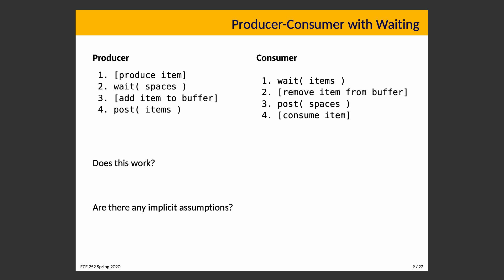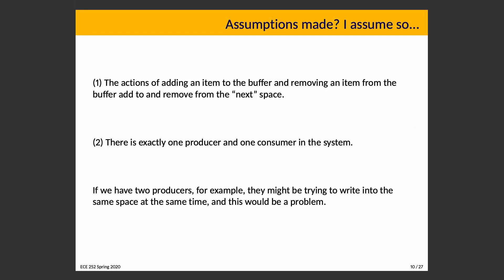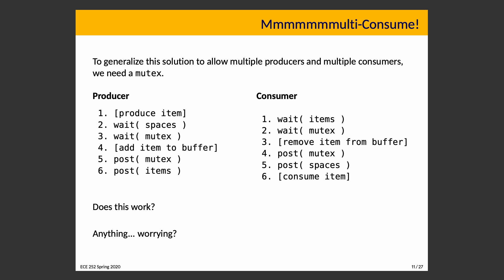Suppose we wanted multiple producers and multiple consumers. Then there's the possibility that two producers are thinking about the same location — we should prevent that. So: the producer produces an item, waits for there to be a space, waits on the mutex, adds an item to the buffer, posts on mutex, then posts on items. The consumer waits for there to be items, waits on mutex, removes an item from the buffer, posts on mutex, posts on spaces, and then consumes the item.